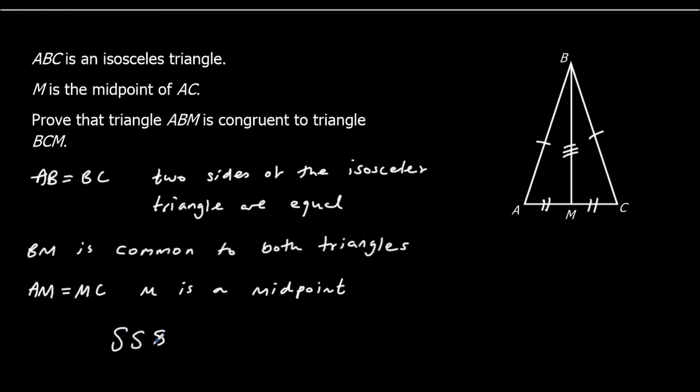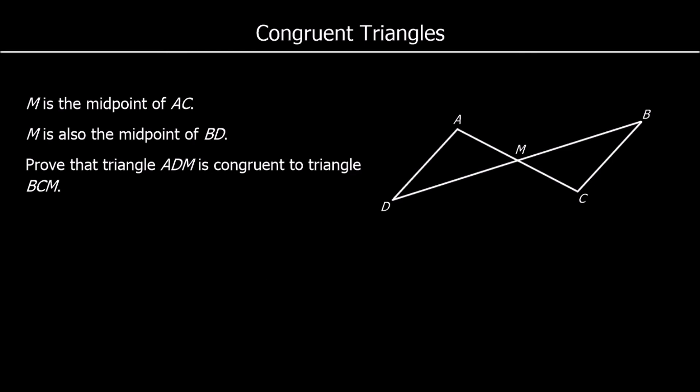All three sides are equal, so the two triangles must be congruent. We could have also said the two base angles of an isosceles triangle are equal and gone with Side Angle Side. As long as you arrive at one of the conclusions — SSS, SAS, ASA, or a right-angle triangle with the hypotenuse and one other side.